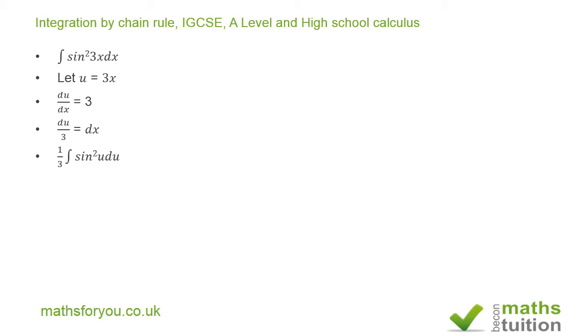Now cos 2u is equal to 1 minus 2 sine squared u, which means that 2 sine squared u is equal to 1 minus cos 2u. So sine squared u then becomes a half of 1 minus cos 2u.